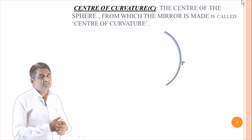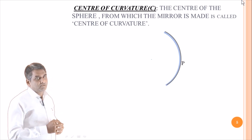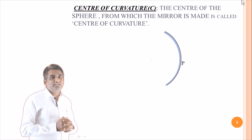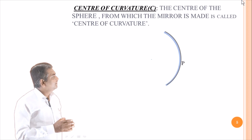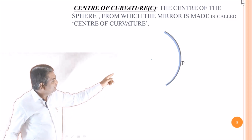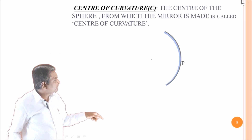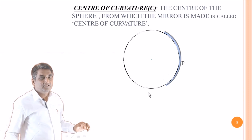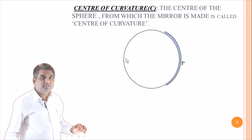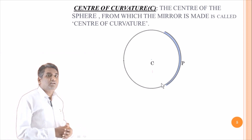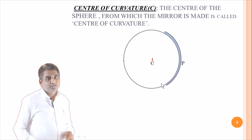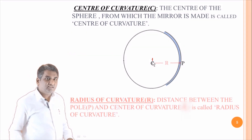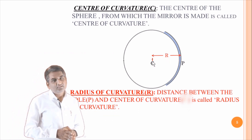The next one is the center of curvature. What is center of curvature? The center of the sphere from which the mirror is made is called the center of curvature. This concave mirror is actually taken off from a spherical surface, and the center of that sphere is called the center of curvature. The distance from pole to center of curvature is called the radius of curvature.